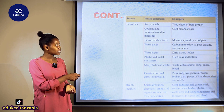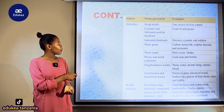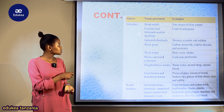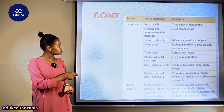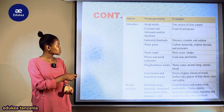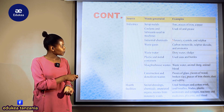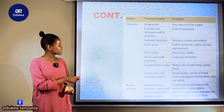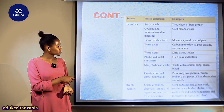Ambayo ni kama tins, pieces of iron, copper — hizi zote ni metal. Pia tuna coolants and lubricants used in machines — hizi zinakuwa in oil form, ambako example yake ni used oil na grease. Pia industrial chemicals — kuna cyanide and sulfur. Both of these are chemicals.